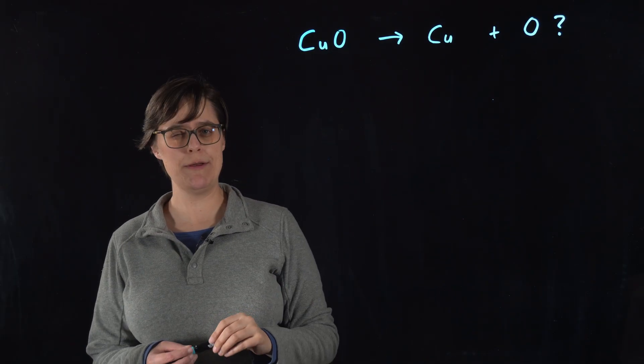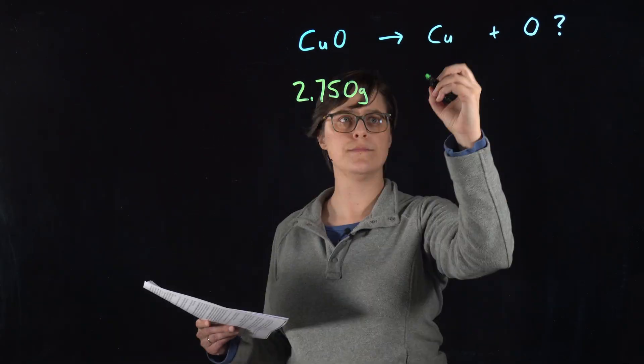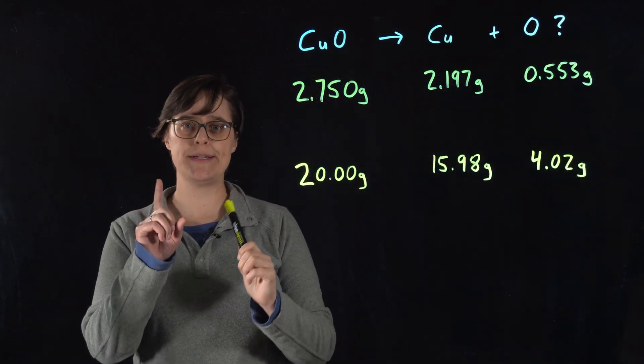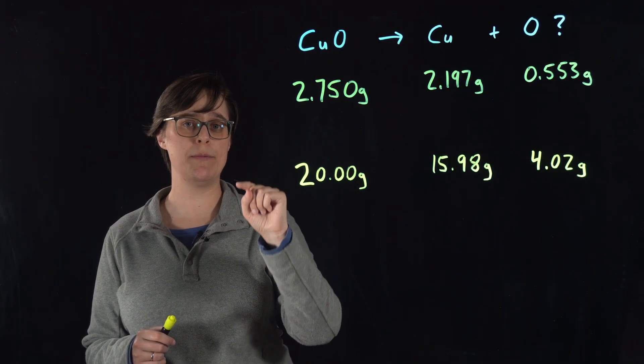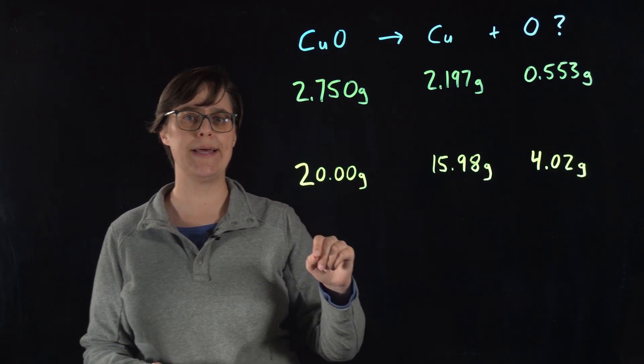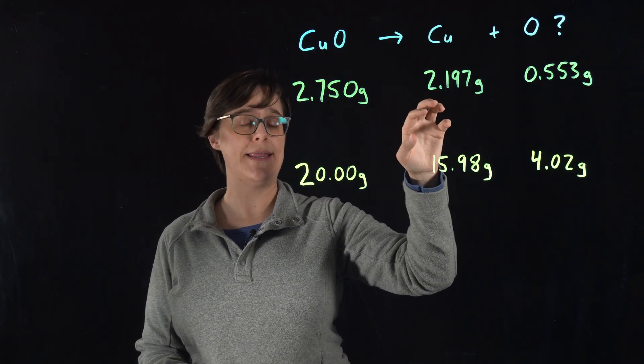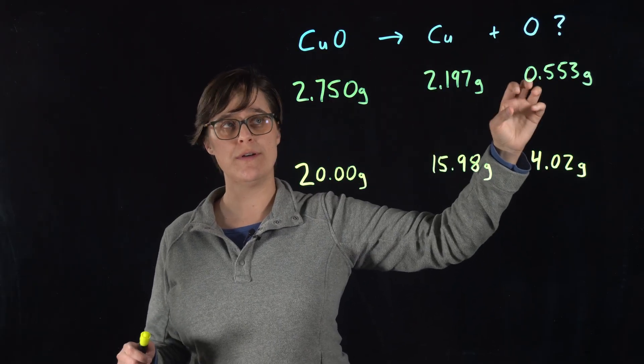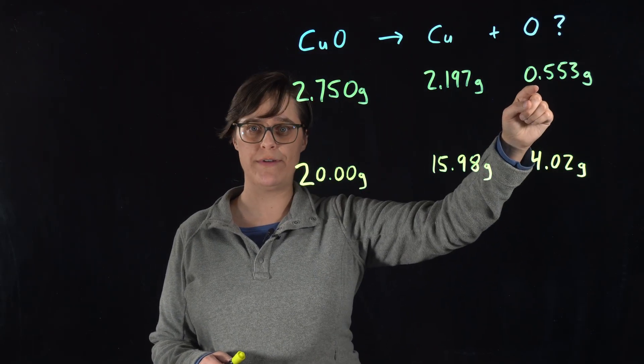Now let me write some data from two different experiments of his. So in experiment one, let's say we have 2.750 grams of lab made copper oxide and the oxygen's driven off. We would be left with a sample of 2.197 grams of copper and that difference, this number minus this number, would be the amount of oxygen that we originally had in our original sample, 0.553 grams.